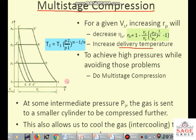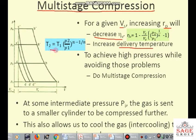Multi-stage compression means the compression of air is done in different stages. Air will be compressed first in the first stage, then the second stage, then the third stage, passing through an intercooler in between to cool the air and decrease its temperature. For a given value of the swept volume, if we are increasing the pressure ratio RP, it will decrease volumetric efficiency. The second negative point is that it will increase the delivery temperature, given by the relation T2 = T1 × (P2/P1)^((N-1)/N). So by increasing the pressure ratio P2/P1, it will increase the delivery temperature.